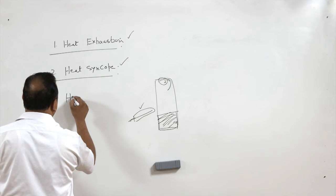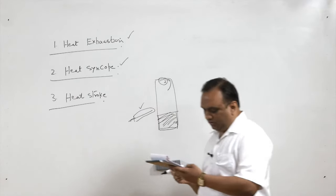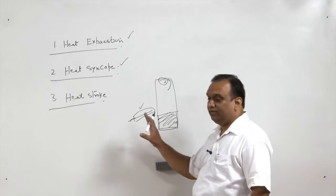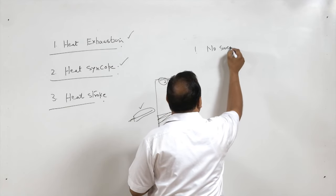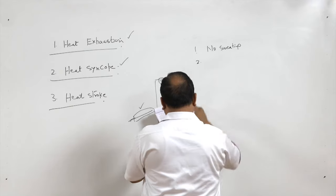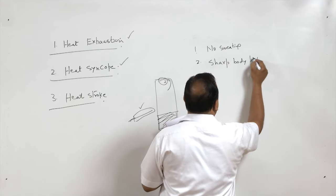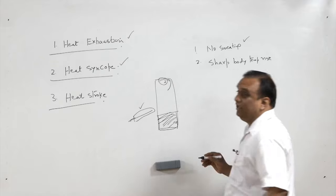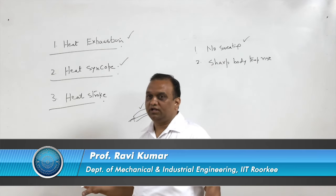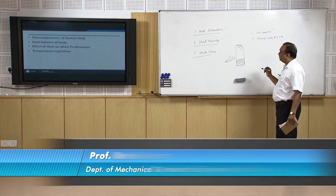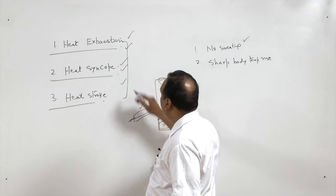The third condition is heat stroke. In heat stroke there is no sweating, and it can be fatal. There is a sharp body temperature rise. No sweating means the cooling mechanism of the body fails. In this case the patient should be immediately put into water or water should be poured over the patient, and they should be immediately taken to the hospital. These are the effects on the body of high surrounding temperatures.